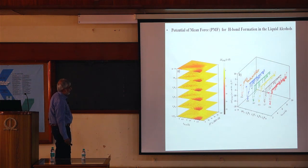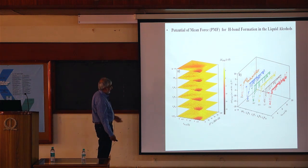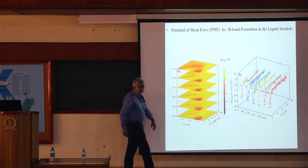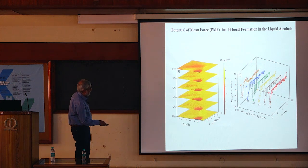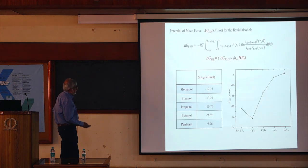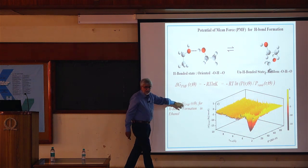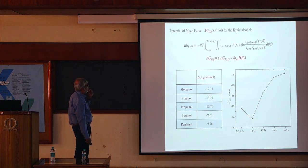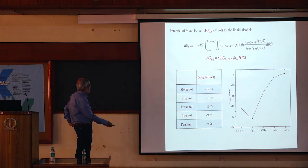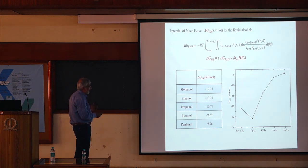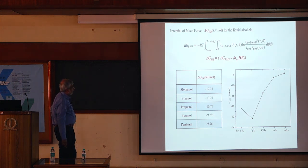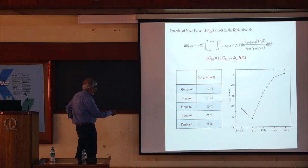I have done this for the various alcohols. A one-dimensional profile taken at the point where P(R, θ) is maximum — about 3 degrees — shows the variation in the depth of the well for the various alcohols. If I integrate over the entire surface, with integral limits given by the cutoff values defined earlier, and multiply by the average number of hydrogen bonds per molecule, I get the ΔG for hydrogen bond formation.